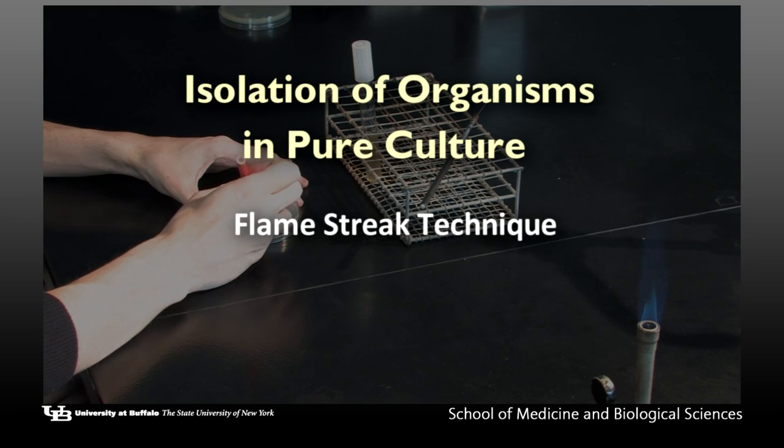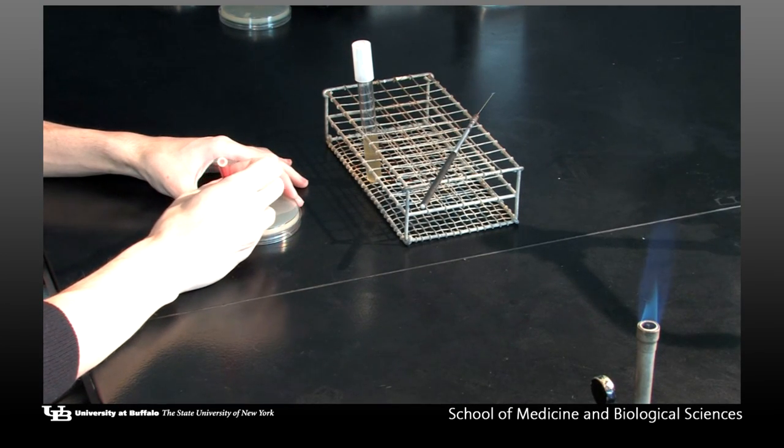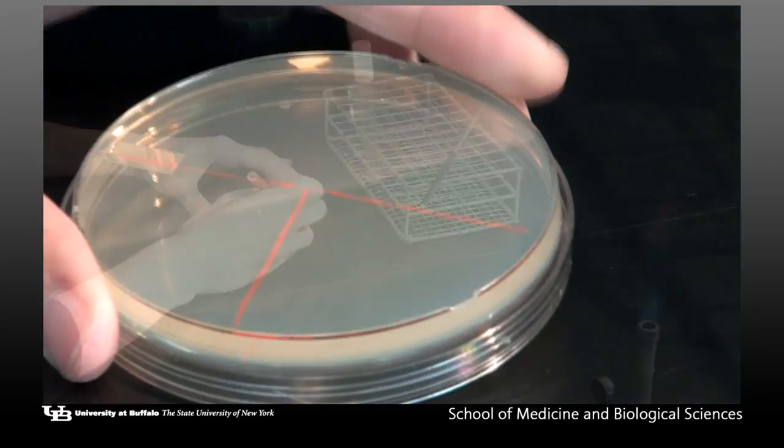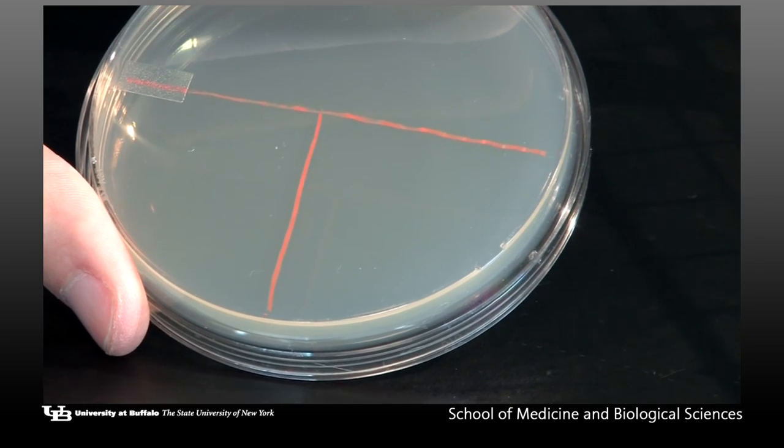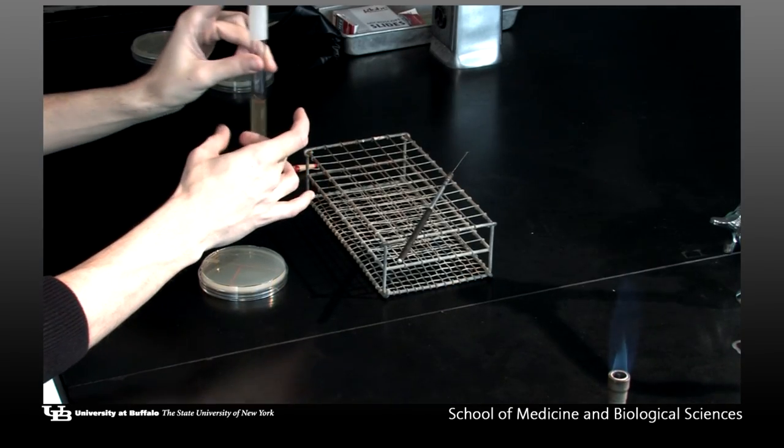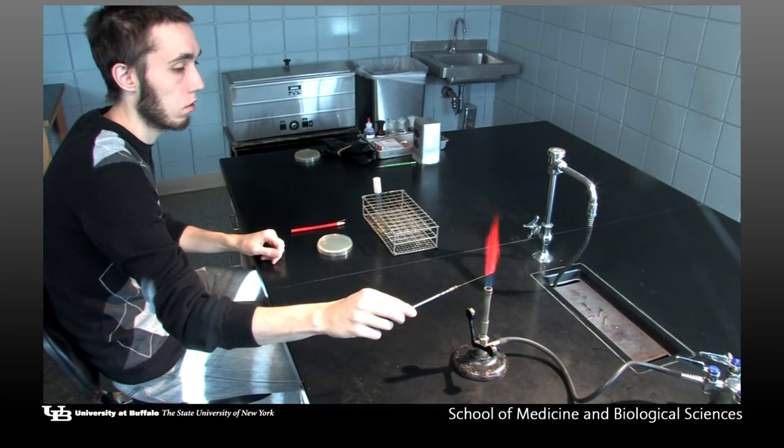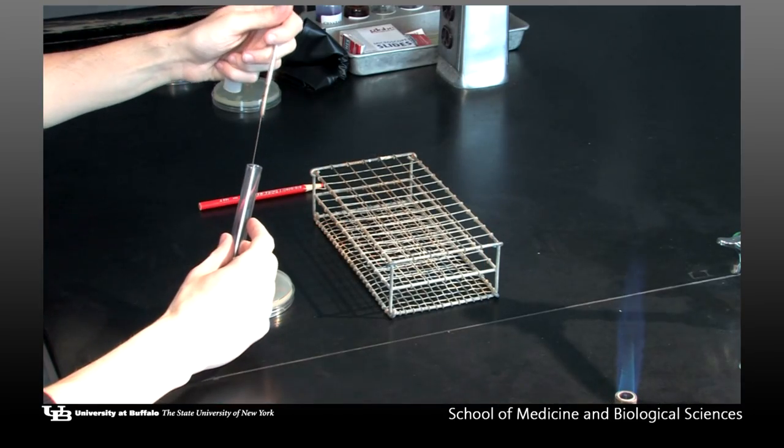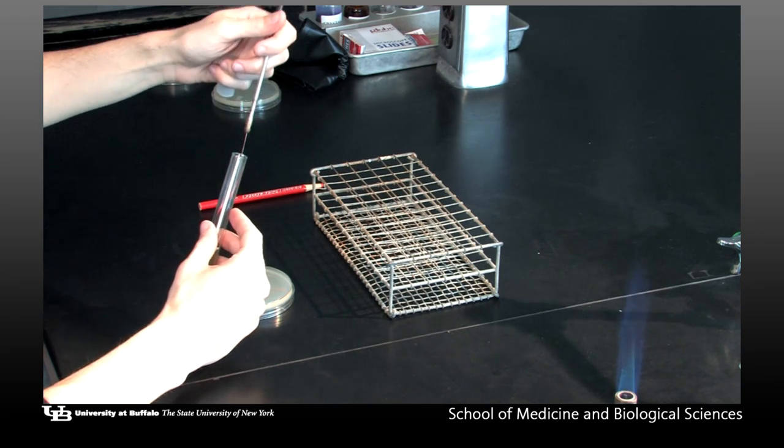Flame-streak technique. Use your china marker to draw a T on the bottom of your agar plate. This will serve as a guideline for streaking the plate. Gently mix the stock culture tube to distribute the organisms. Flame bacterial loop. Using aseptic technique, pick up a loopful of the mixed broth culture.